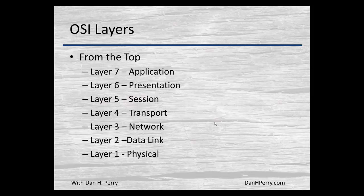Looking at the OSI model from the top, layer 7 is the Application layer. Sometimes you'll see layers listed by number, sometimes by name, or a combination of both. Layer 6 is the Presentation layer, layer 5 is the Session layer, layer 4 is the Transport layer, layer 3 is the Network layer, layer 2 is the Data Link layer, and layer 1 is the Physical layer.